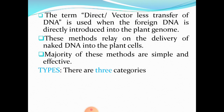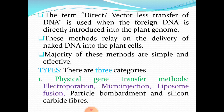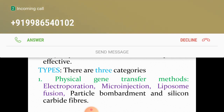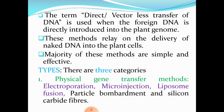There are basically three different types of direct gene transfer methods. Number one: physical gene transfer methods. Under this, we study electroporation, microinjection, liposome fusion, particle bombardment, and silicon carbide fibers — five methods in total. As per the syllabus, you have to learn about electroporation, microinjection, and lipofection or liposome fusion.